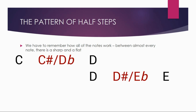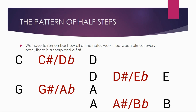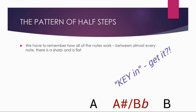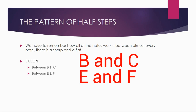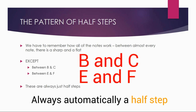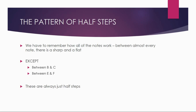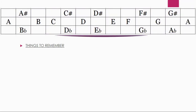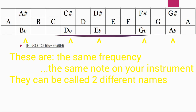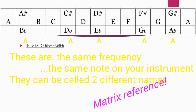Between almost every note — C-D, D-E, G-A, A-B — there's going to be a sharp and a flat. This is going to work with two exceptions: C and B, and F and E. Between B and C, and between E and F, they are always just half steps. On the piano, there's no black key between them. Now, let's use this graph, which shows every single note with all the notes in between them. You can see the sharp and the flat occupy the same space — the same pitch, the same frequency. We could call it Mr. Smith or Agent Smith — it's the same note, just a different name.